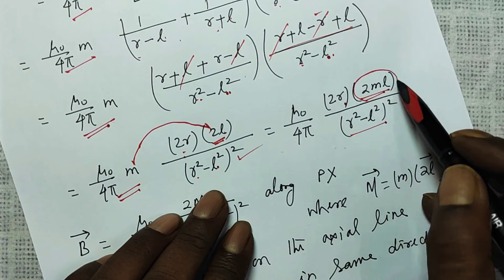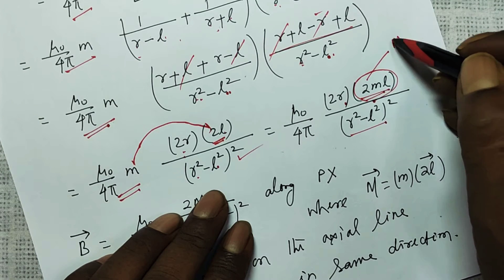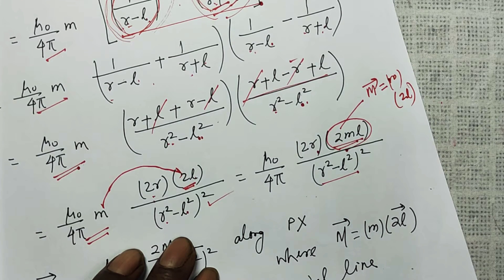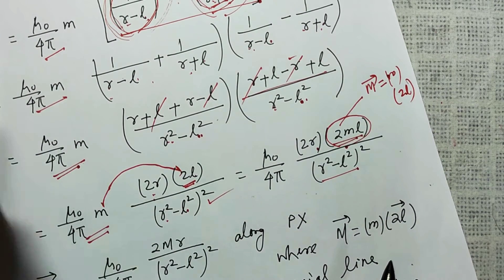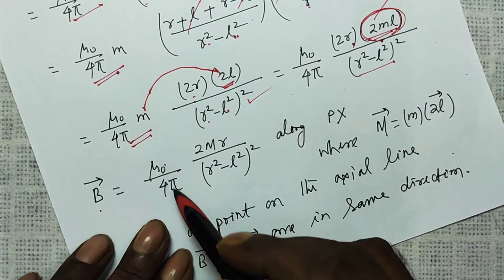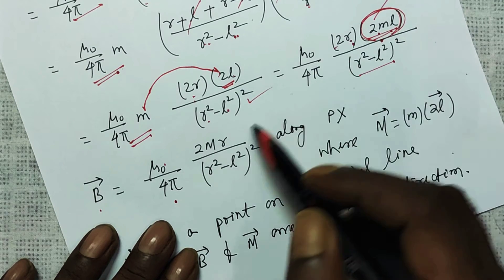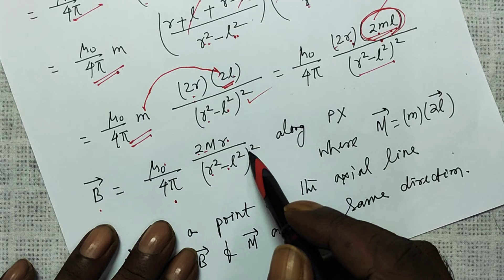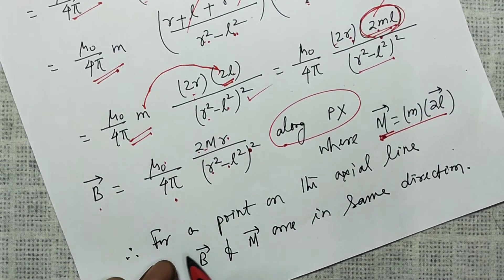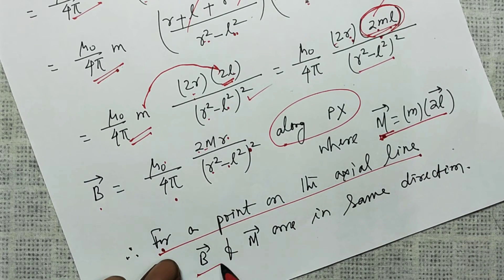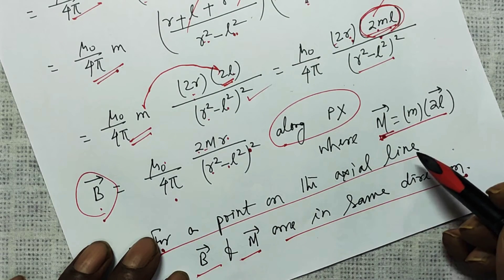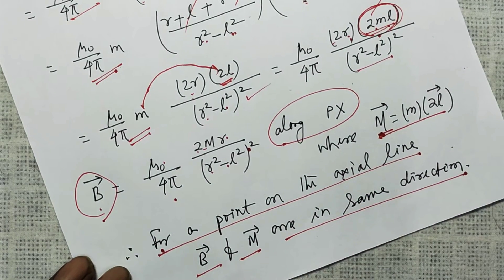Now, 2ML is the magnetic moment — in Magnetism lesson 2 I explained it is a vector quantity defined as pole strength multiplied by magnetic length, directed from south pole to north pole. So I substitute capital M for that. Therefore B equals mu naught over 4 pi times 2MR over (R squared minus L squared) squared, along Px, where M is the magnetic moment. Conclusion: for a point on the axial line, B and M are in the same direction — that is, the net field is from south to north and the magnetic moment is also from south to north.